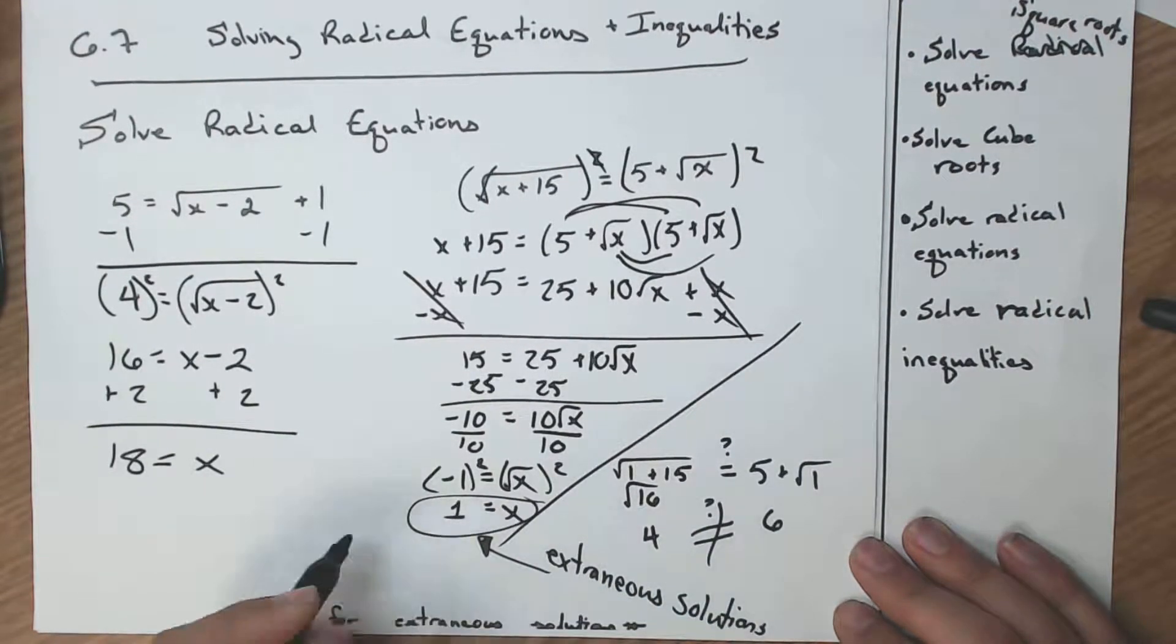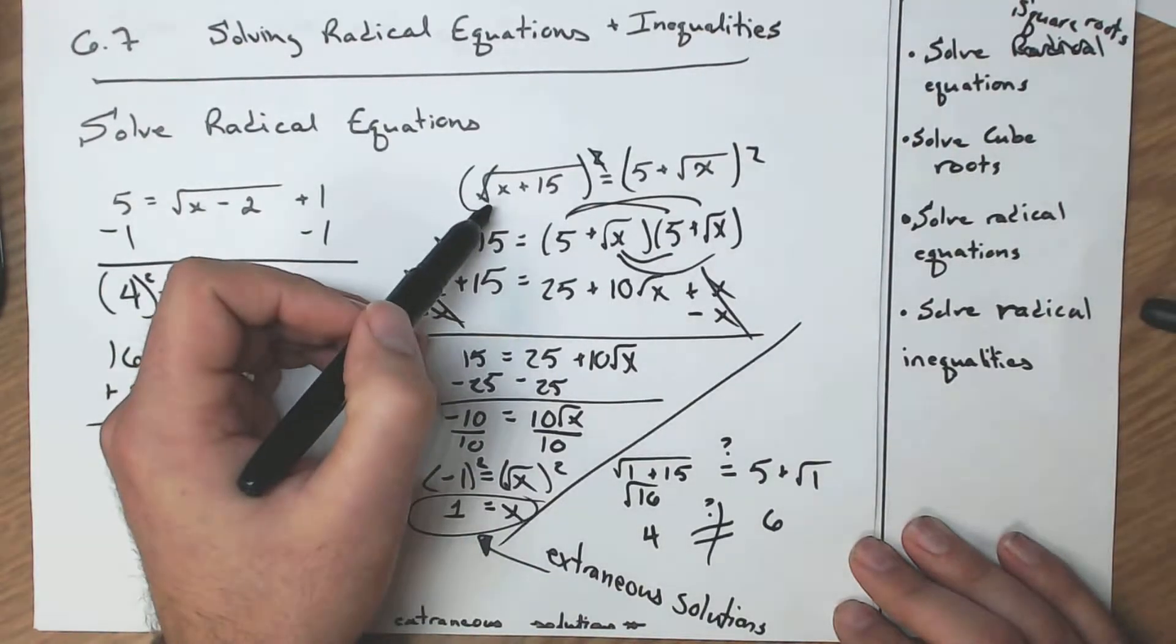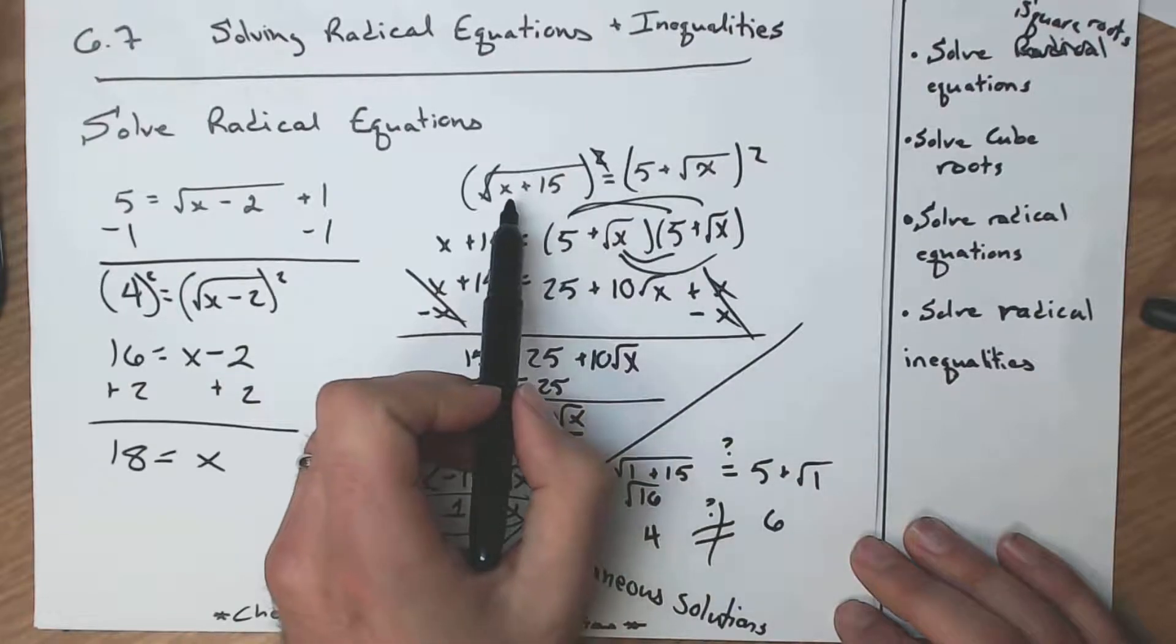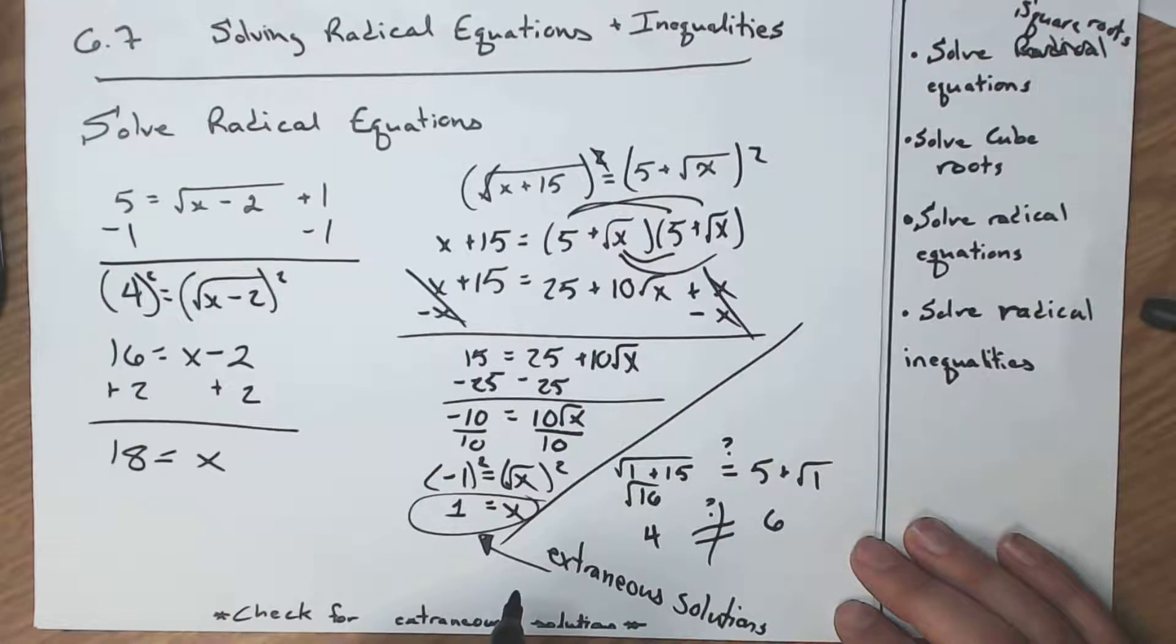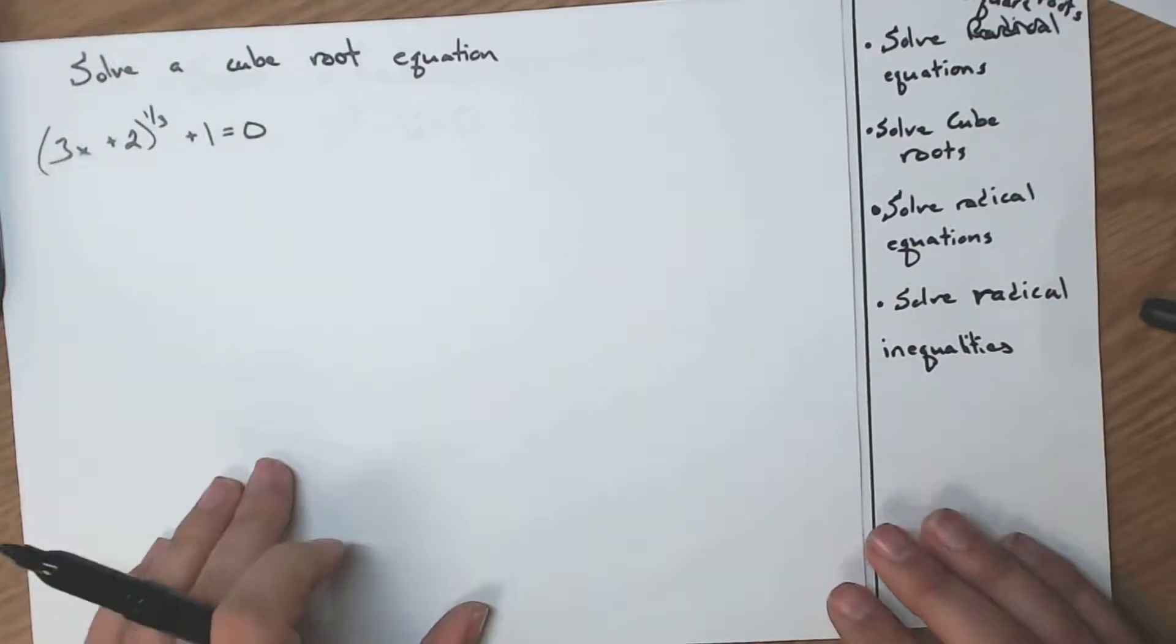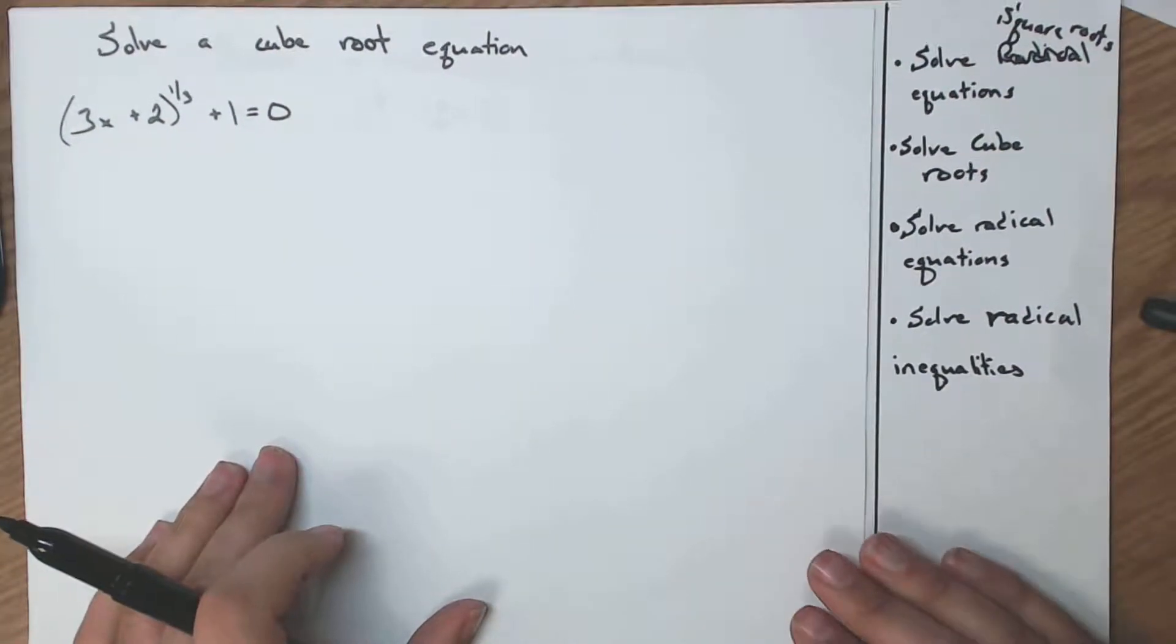Extraneous solution. And that happens, or it really means that this doesn't solve this problem. And that just happens because these two graphs, if we were to graph both of these, there's no intersection. All right, let's go on to the next one. And if you're my students, yes, you actually have to check them every time.